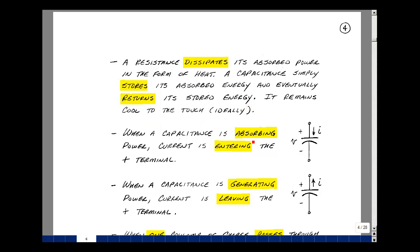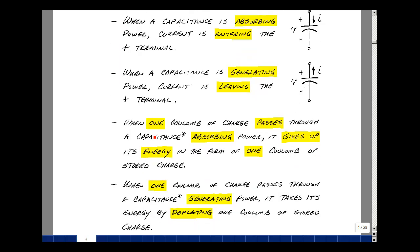A resistance dissipates its absorbed power in the form of heat. A capacitance simply stores its absorbed energy and eventually returns its stored energy. So ideally, it remains cool to the touch. When a capacitance is absorbing power, current is entering the plus terminal. When a capacitance is generating power, current is leaving the plus terminal. Some of the physics is a little bit different, but because of the derivative relationship, we can draw these conclusions.